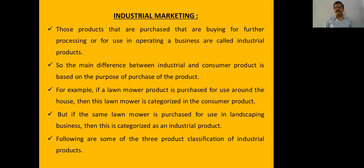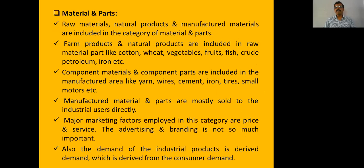Industrial marketing is the process of purchasing and selling industrial products. The main difference between industrial and consumer products depends on usage. The first type of industrial product is materials and parts — raw materials used in factories, such as pulp used for the paper industry, and component materials and spare parts used in car, automobile, and bike industries.